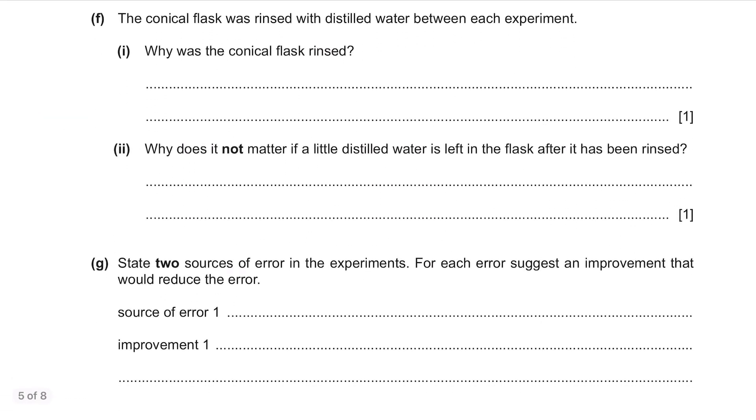Part F. The conical flask was rinsed with distilled water between each experiment. Why was the conical flask rinsed? It's a common sense question, it's to remove the residue from previous experiment. Why does it not matter if a little distilled water is left in the flask after it has been rinsed? Whether or not there's some droplets of water left in the flask, we're still going to add the exact amount of solution E or F using the measuring cylinder as said in the question. So, it doesn't matter having some water there but it will matter if it's solution E or F left as that's going to change the volume of it added.